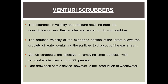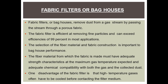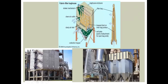One drawback of venturi scrubbers is the production of wastewater. Next are fabric filters or bag houses. Fabric filters or bag houses remove dust from the gas stream by passing the stream through a porous fabric. These are the filter bags. At the bottom there is a collection hopper, a cell plate, a point of attachment for open bag ends, a trap for dust on the inner bag surface, dusty air inlets, and clean air outlets.